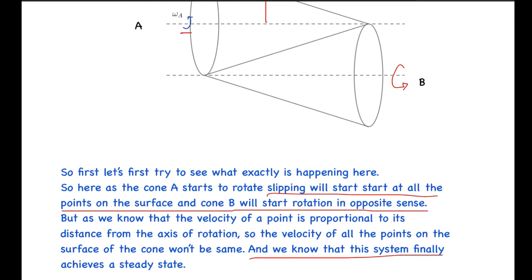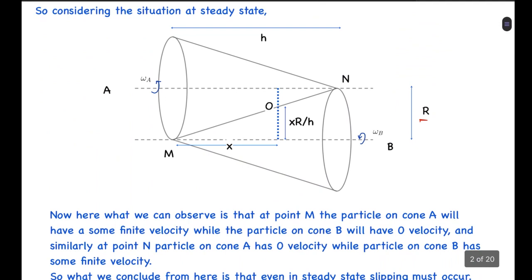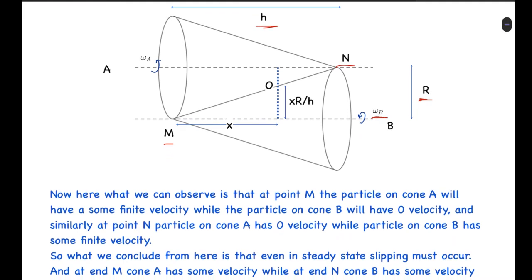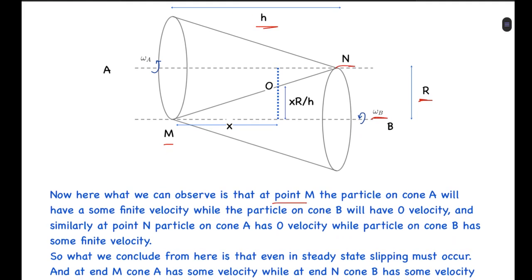This system finally achieves a steady state. I have assumed the height of the cones to be h, the radius to be r, and the angular velocity of cone B in steady state to be omega_b. The apex points of cones B and A are called M and N respectively. At point M, the particle on cone A has velocity omega_a times r, while the particle on cone B has zero velocity. Similarly, at point N, the velocity on cone B is omega_b times r while cone A has zero velocity.